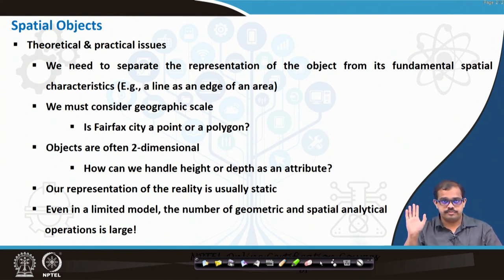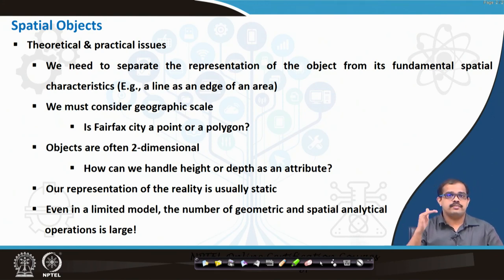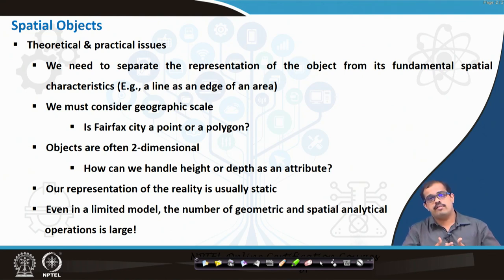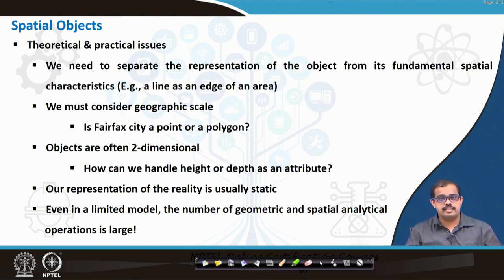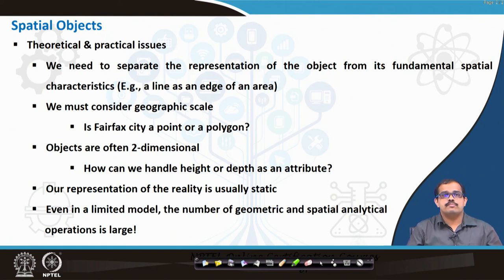Objects are often two-dimensional; we have to handle height and depth as an attribute. Our representation of reality is usually static — the real world is static. When looking at a GIS model, it cannot be dynamic, though nowadays due to web GIS involvement, it is becoming more dynamic. Yet in today's scenario it is still largely static. Even in a limited model, the number of geometric and spatial analytical operations is quite large — even for a single road, the analytical and geometrical aspects to consider are very significant in terms of spatial objects.